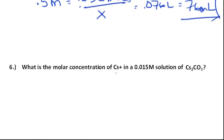In this next one, you're asked to find what is the molar concentration of cesium plus in a 0.015 molar solution of cesium carbonate. Well, this is a salt, and if you had one liter of this, you would have 0.015 moles of cesium carbonate.